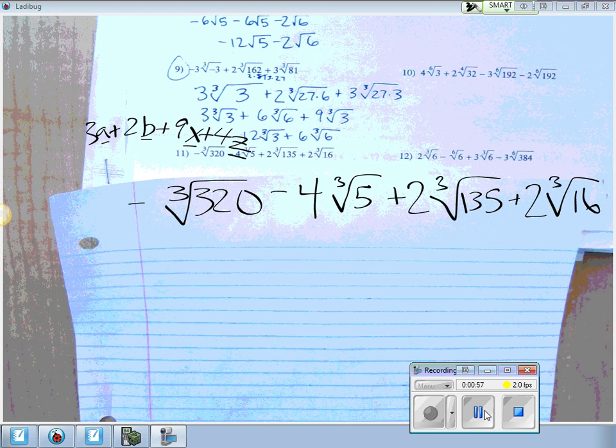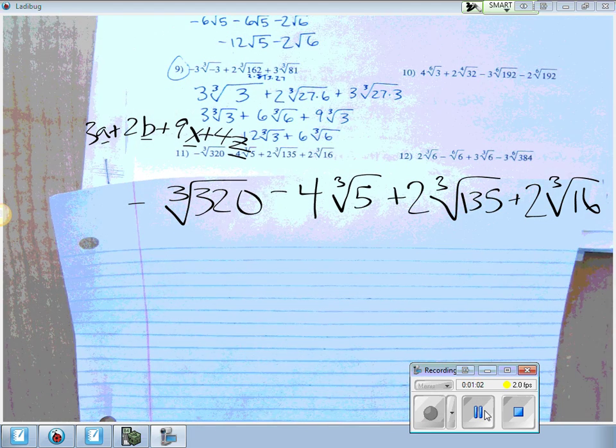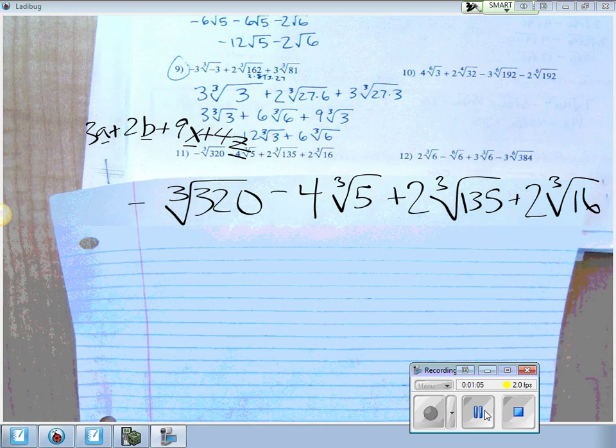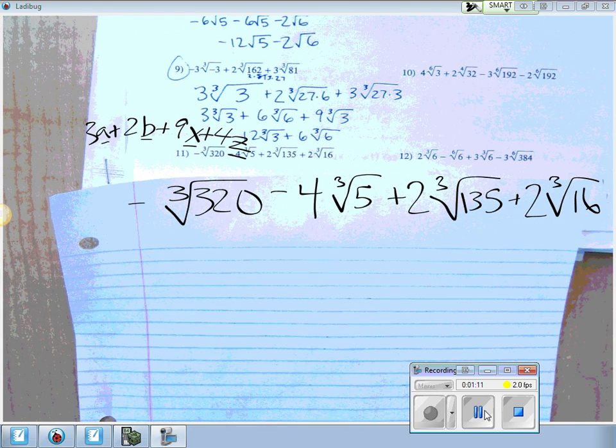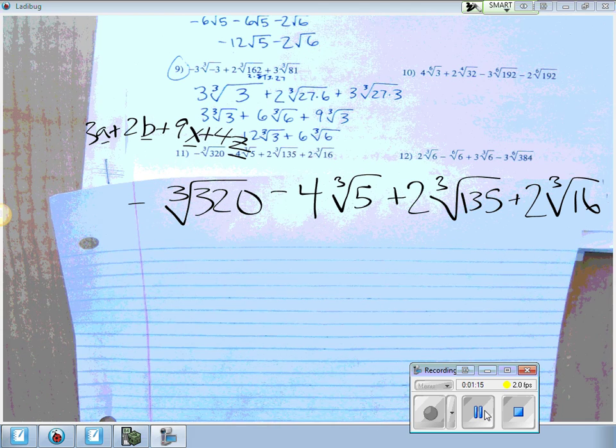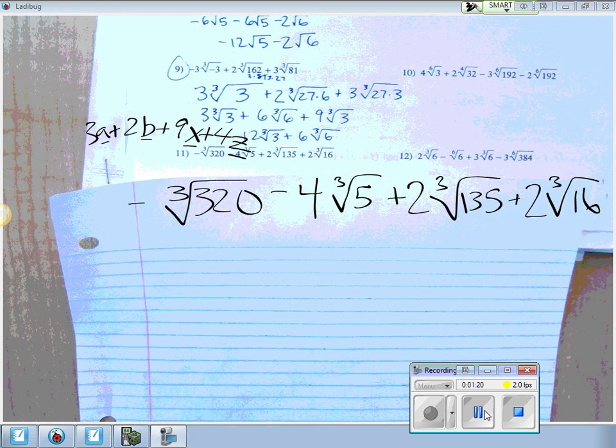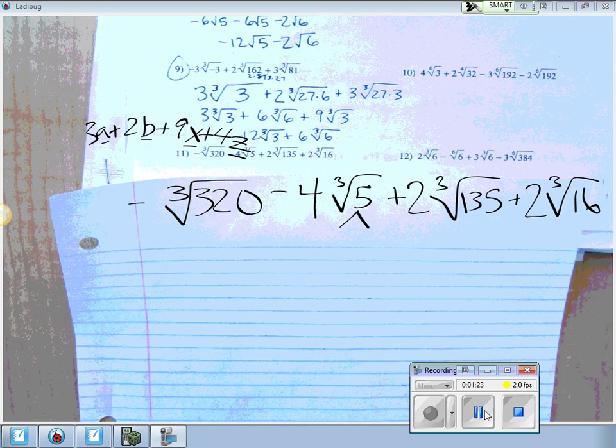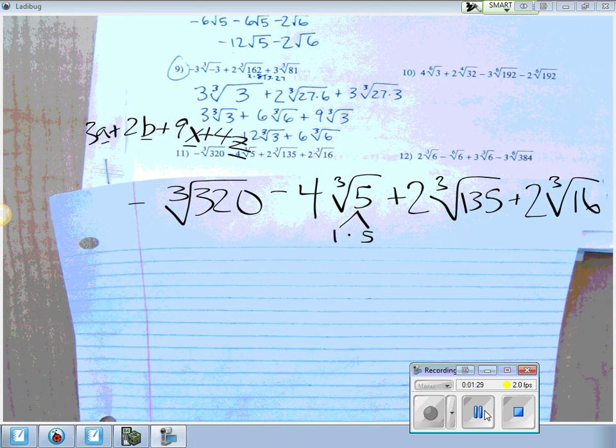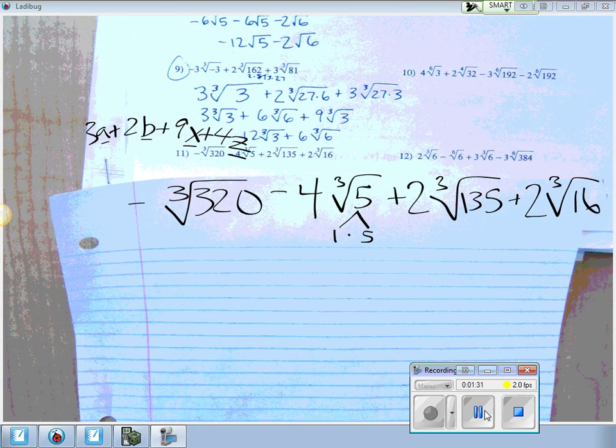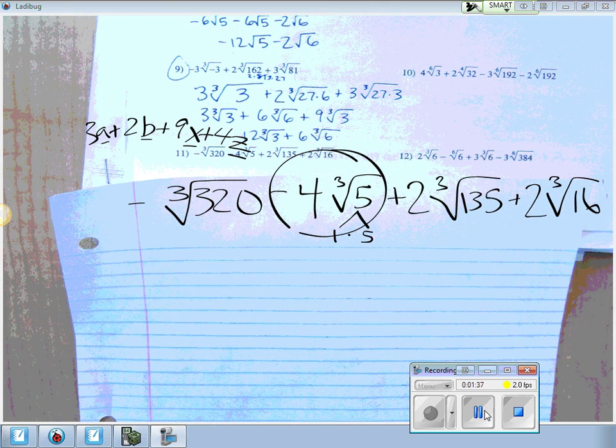So our next step is, can we kind of morph them or change them so they do look similar? So maybe we can add them or subtract them together, and that's where we come in with this whole simplifying concept. I'm going to start with the easiest one first. 4 times the cube root of 5 is basically done. You can't do anything with that because 5 doesn't break down into any factors other than 1 and itself. So I'm just going to circle this one so we realize we're kind of done. We can't do anything with it.